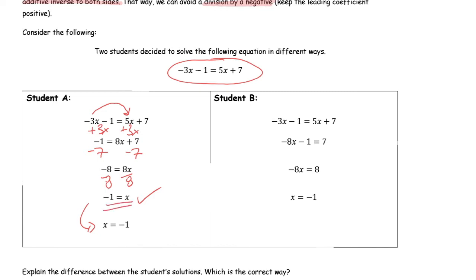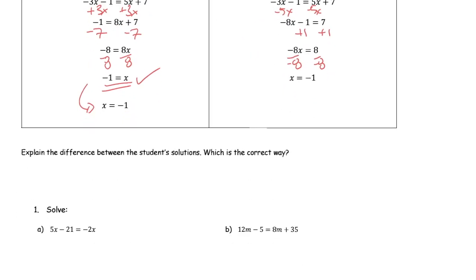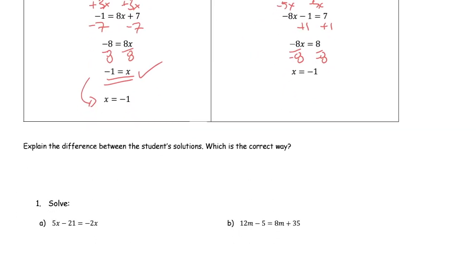It's not wrong to leave it as negative 1 equals x; it just looks better to write x equals negative 1. Student B moved the 5x over — subtracting 5x from both sides — getting negative 8x minus 1 equals 7, then added 1 to both sides to get negative 8x equals 8, and divided by the coefficient to get negative 1. Both students get the same answer. The difference is which side of the equation they brought the variable to.